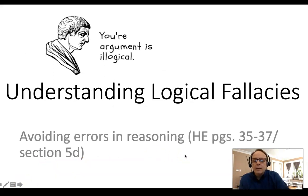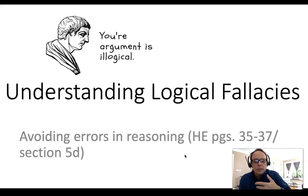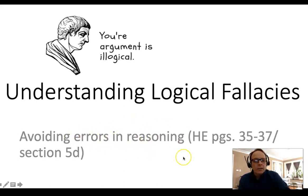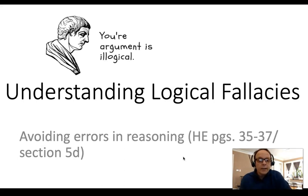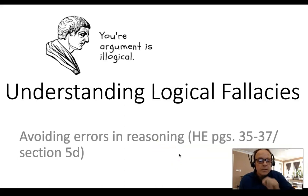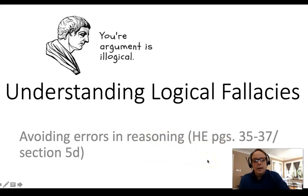Now we're going to talk about logical fallacies. Using persuasion is a big part of what we've already covered when we discussed ethos, pathos, and logos. When you cross the line and go beyond logical argument, that's when you get into logical fallacies, which are basically errors in reasoning. We want to avoid these. If you see a logical fallacy in somebody else's writing, that usually means they don't have a strong argument. If I see one in your paper, it damages your ethos — your credibility as a trustworthy source. Pages 35 to 37 in the Harvard Essentials book have more detail.